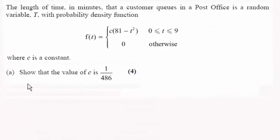Hi there. Now for the first part of this question we've got to show that the constant for this probability density function is 1 over 486.